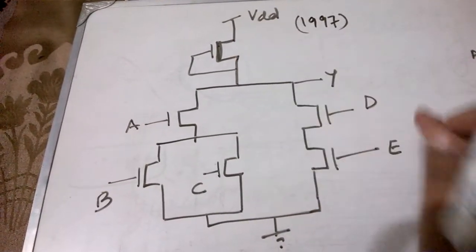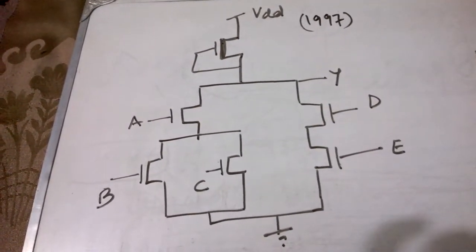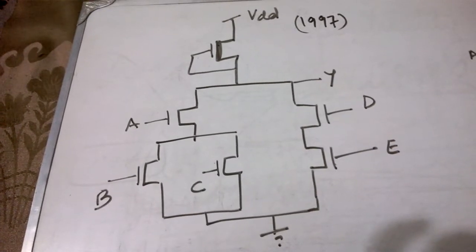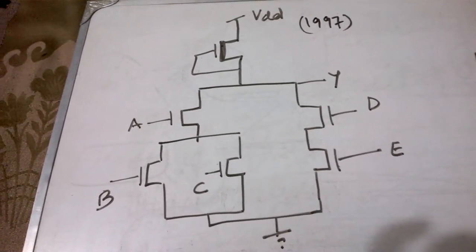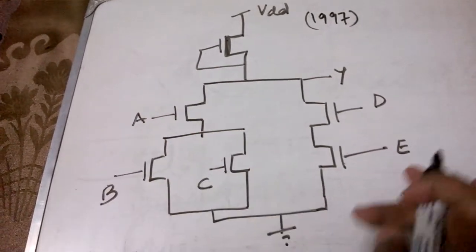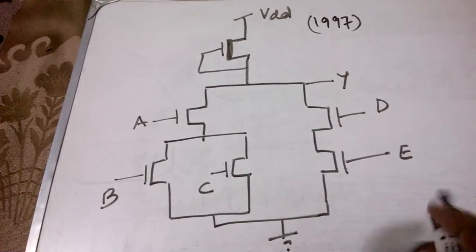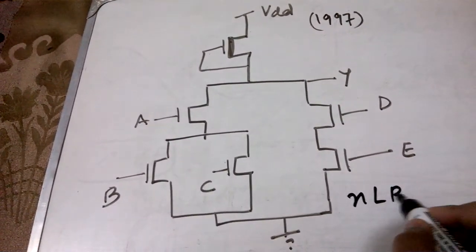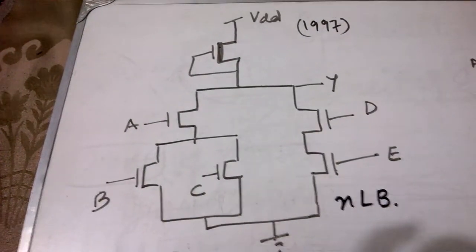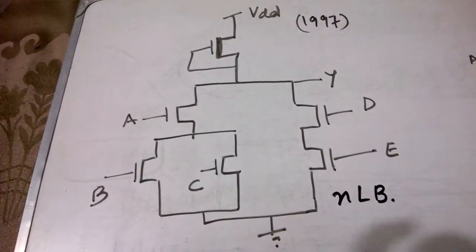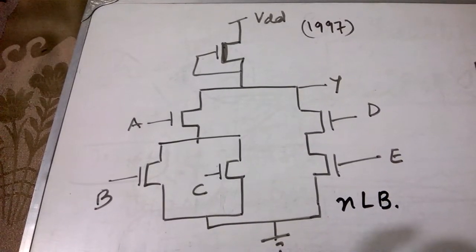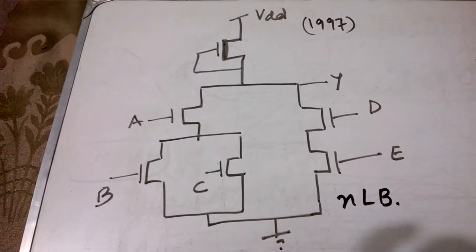Basically what you get is Y bar is equal to, always a bar is inserted because we are writing the expression using the NMOS, that is the N logic block. Now how we will write the expression? We see B and C are in parallel so we start from here we write B plus C.